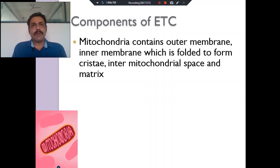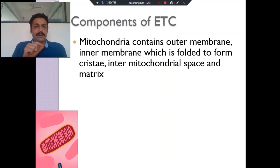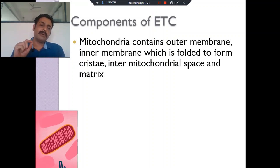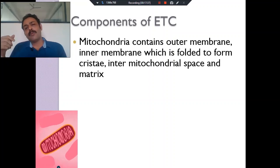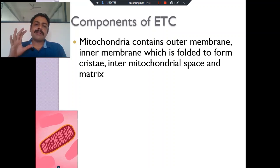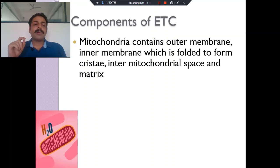What are the components of the electron transport chain? The mitochondria contains the outer membrane, the inner mitochondrial membrane, the inter-mitochondrial space in between, and inside the inner mitochondrial membrane is the matrix. The inner mitochondrial membrane has many cristae — why? To increase the surface area of the inner mitochondrial membrane. All the electron transport chain enzymes and complexes are present there.